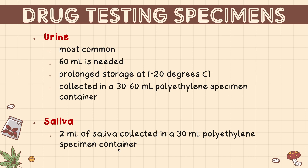Different types of specimens can be used to check for the presence of a drug, but the most common is urine — it is painless and non-invasive to collect. A volume of 60 ml is needed and collected in a 30 to 60 ml polyethylene specimen container. If the sample needs to be stored for a long time, it should be placed at negative 20 degrees Celsius.